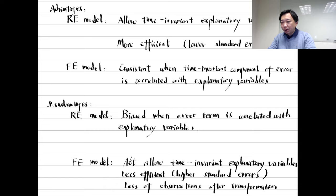And these unobserved factors usually affect both the outcome variables and the explanatory variables we are interested in. Under the circumstances, only the fixed effects lead to consistent estimates.